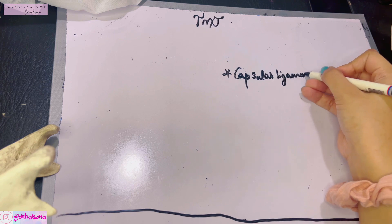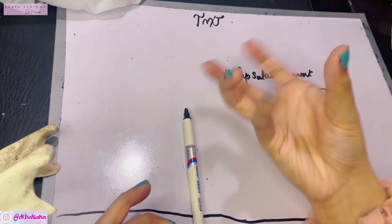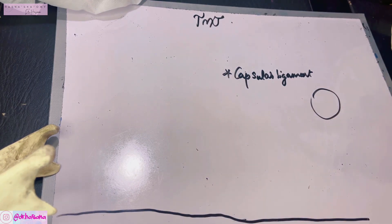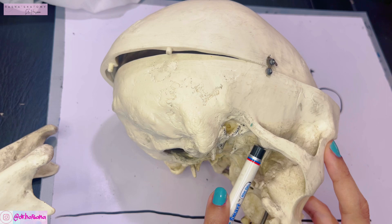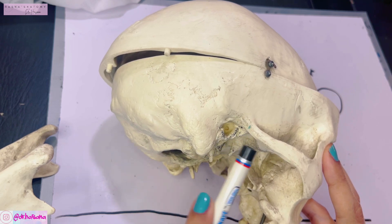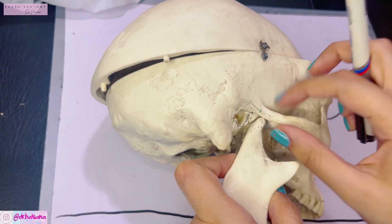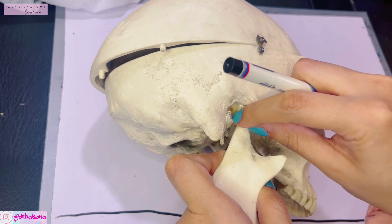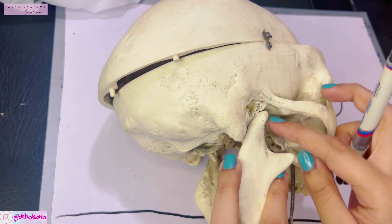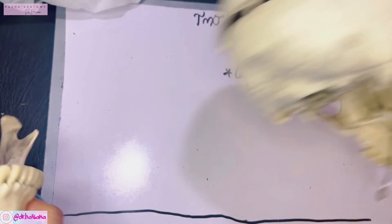The fibrous capsule completely surrounds the joint — like a cover over the entire joint. It is attached above to the articular tubercle, the circumference of the mandibular fossa, and the hemotympanic fissure, and below it is attached to the neck of the mandible. It is loose above the intra-articular disc and tight below.